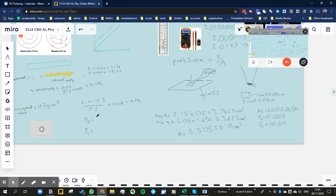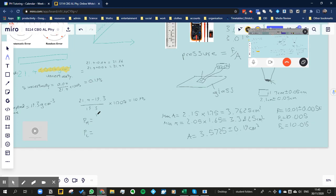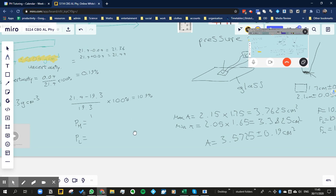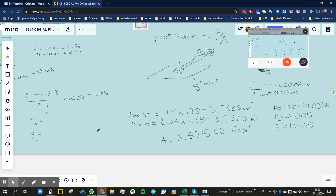So the highest pressure is going to be the highest force divided by the lowest possible area. The highest force would be 10.015 newtons divided by the lowest area, which is 3.3825 centimeters squared.